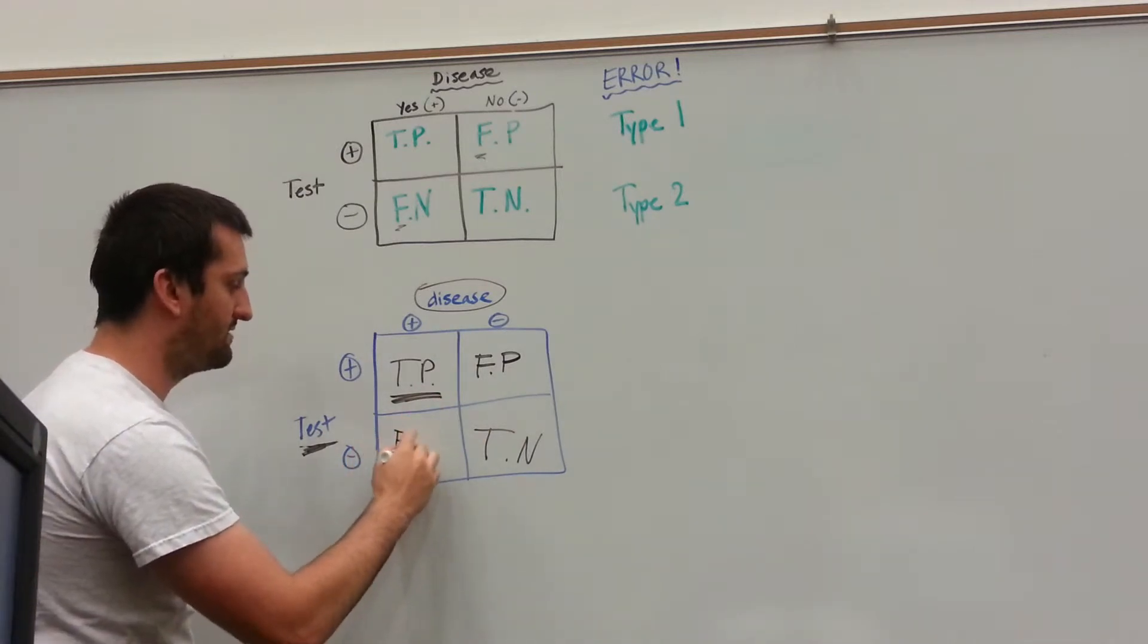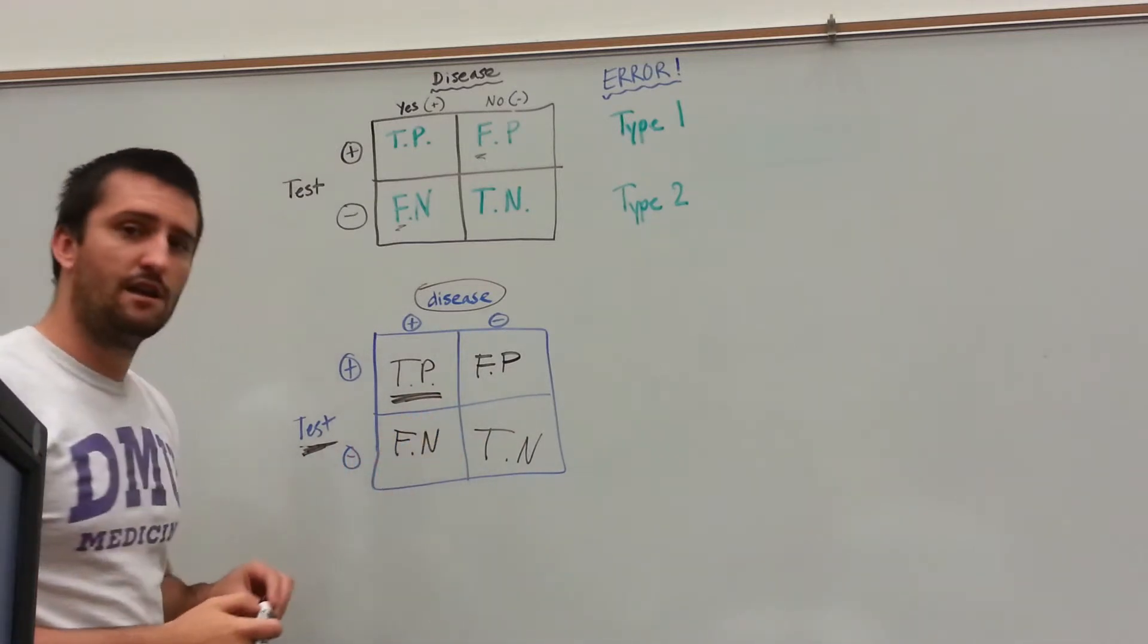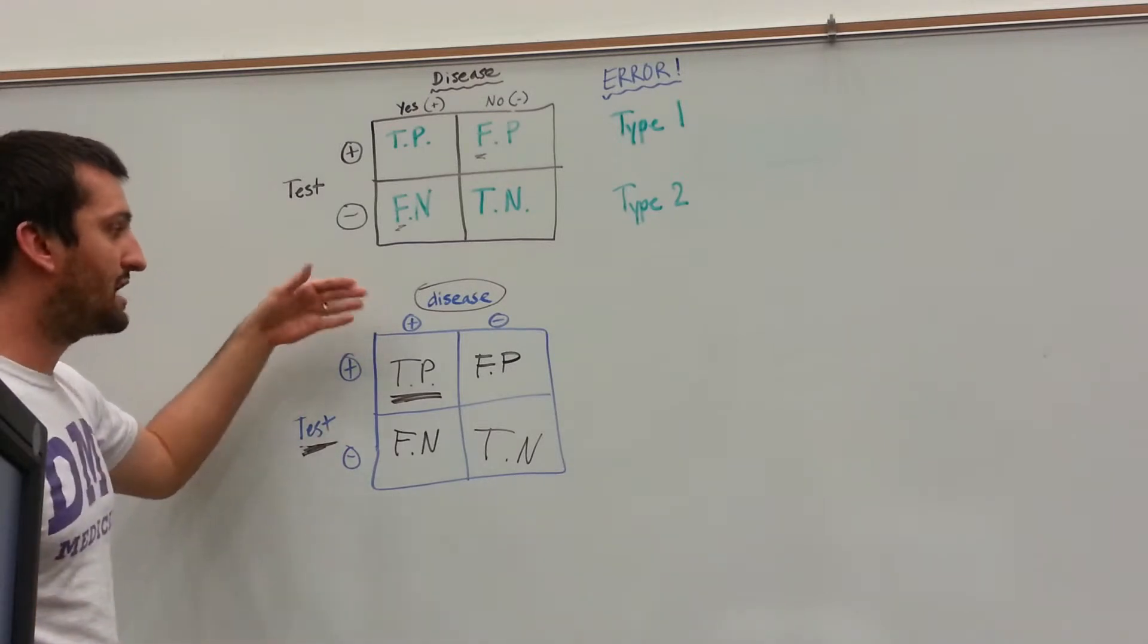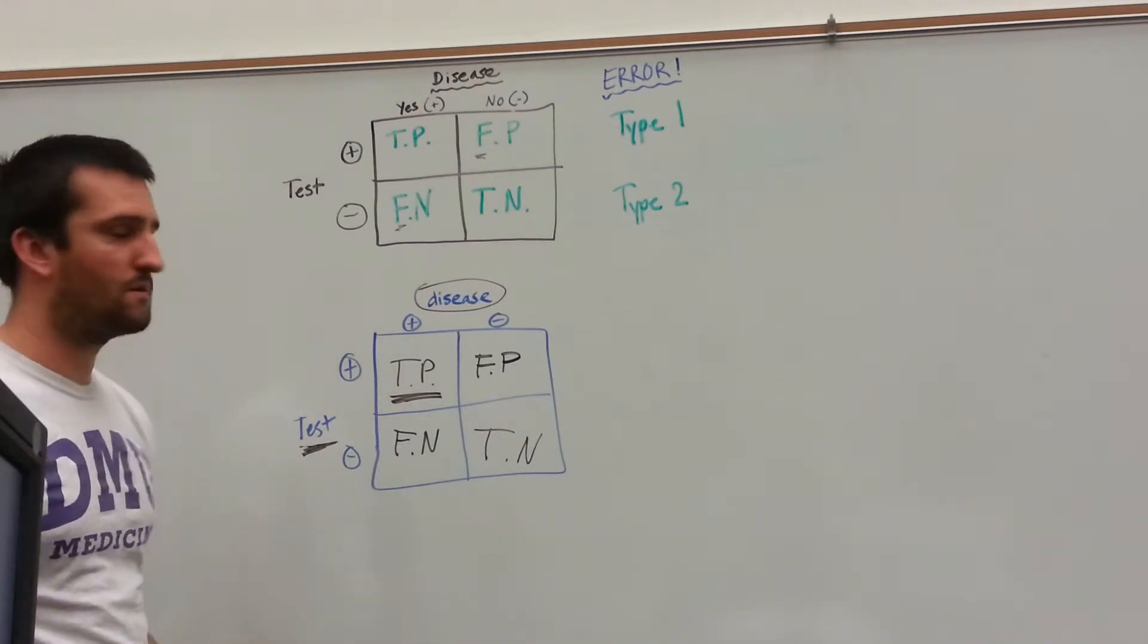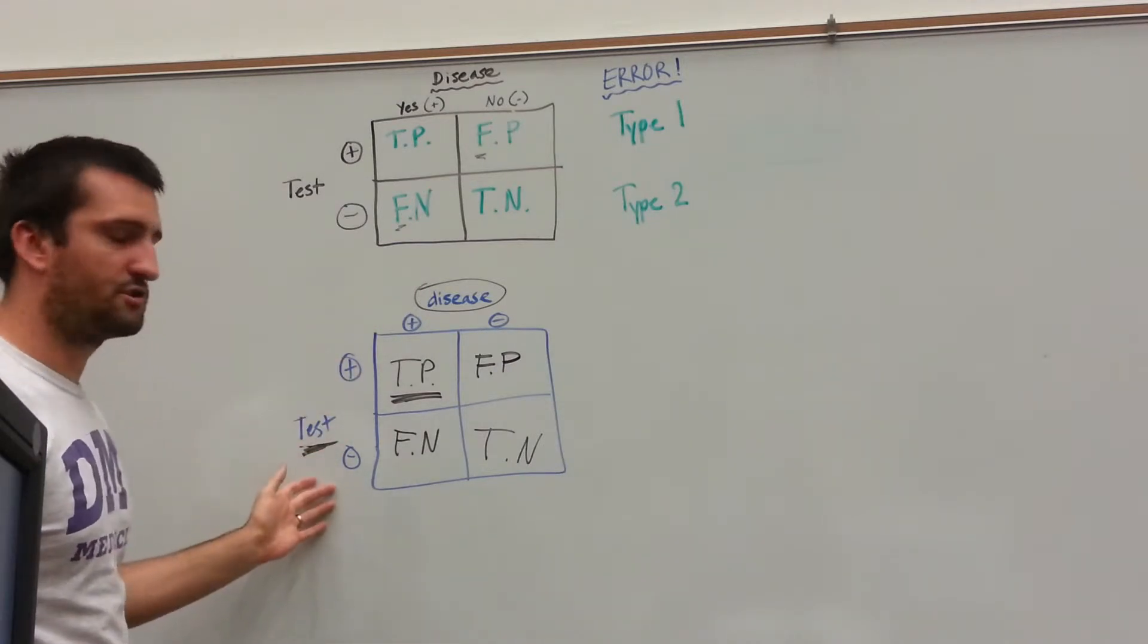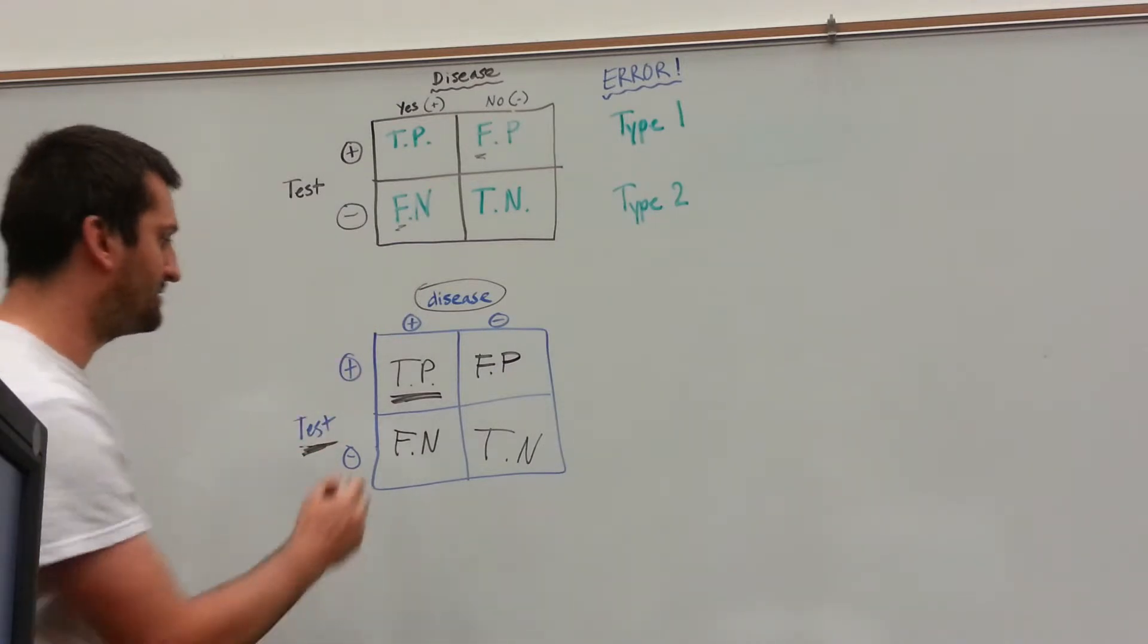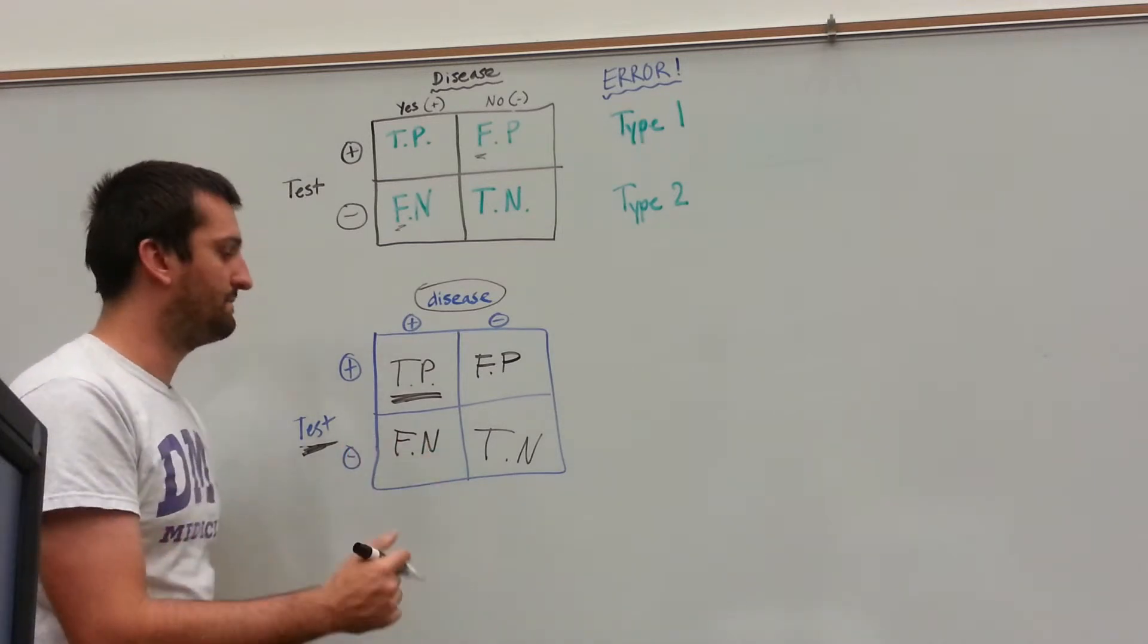On the other hand, false negatives would be where you actually have diabetes, but the test says you don't. So you may be guilty, but the jury says you don't. So that would be a false negative.